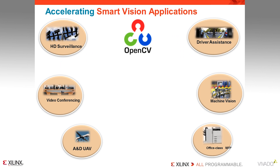OpenCV library functions are used in many video applications, from driver assistance and machine vision to video conferencing and surveillance. Much of the processing required in these video applications can be performed on a standard microprocessor. However, if real-time image processing is required, the detailed pixel-level processing is often required at a rate which exceeds the processing ability of microprocessors — and without this, there is no live video.